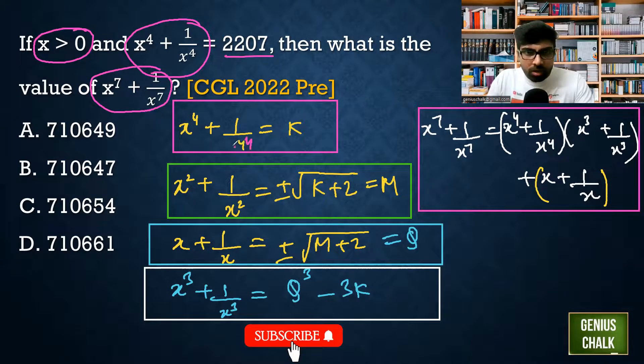If x^4 plus 1 by x^4 equals k, then x square plus 1 by x square equals root of k plus 2. If I say this is m, then x plus 1 by x must be plus minus root of m plus 2. So basically you have to add plus 2 and then you get x plus 1 by x.